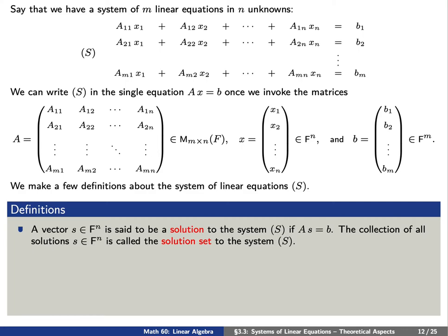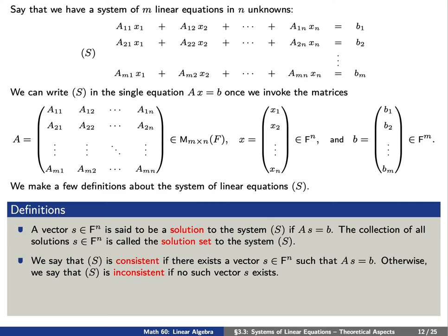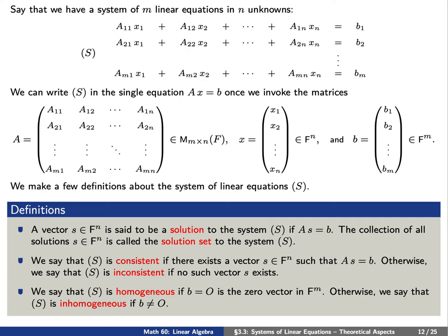A vector is said to be a solution if the vector lowercase s satisfies A times lowercase s equals B. The collection of all such vectors will be called the solution set to system capital S. We say capital S is consistent if there exists at least one solution; otherwise it is inconsistent. We say the system is homogeneous if the right-hand side is all zeros — that is, if B is the zero vector — otherwise it is non-homogeneous.